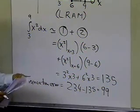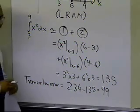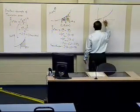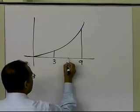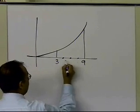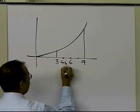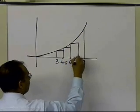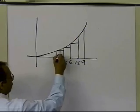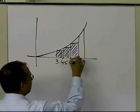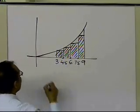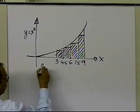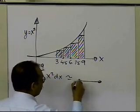As an exercise, check whether you get less truncation error by drawing four rectangles instead of two from 3 to 9. With midpoints at 4.5 and 7.5, you draw four rectangles. Graphically, you can see that more of the area under the curve is covered, so you'll probably get a better estimate. Find the approximate value of the integral of x squared from 3 to 9 using four rectangles.